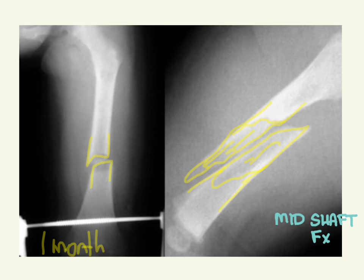Here we have a spiral fracture, which is usually the result of some sort of twisting force, and again that's very unlikely to happen from just falling off a bed.